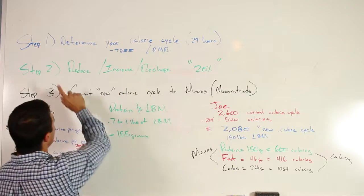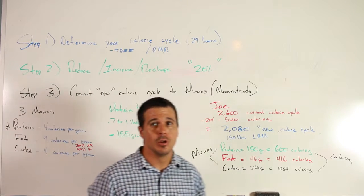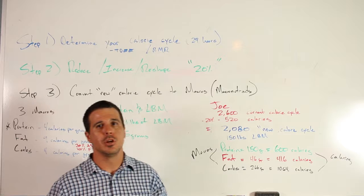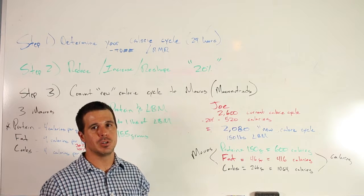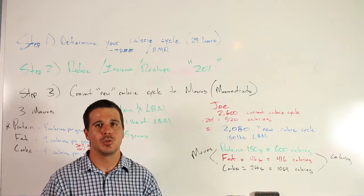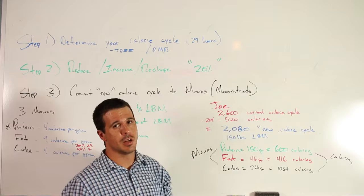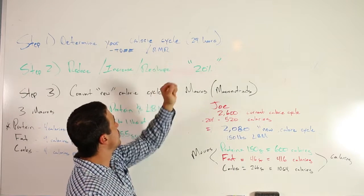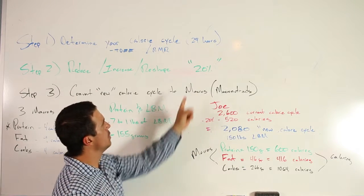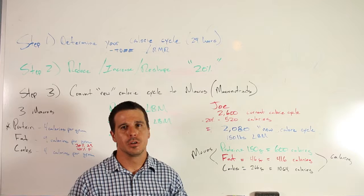Once you determine your current calorie cycle, step two is we need to reduce, increase, or reshape. Most of us fall into the weight loss category. I have 20% in quotation marks because 20% reduction is usually the best way to go. Same if you're increasing, you could go 15%. You could even do 30 to 35% - it's drastic, not really recommended. That's a lot of calories you're going to cut out. For a quick example: if we were at 2000 calories at our current cycle and we wanted to reduce, we would take that 20% from 2000, that's 400 calories, and our new calorie cycle would be 1600 calories.